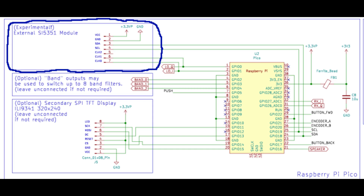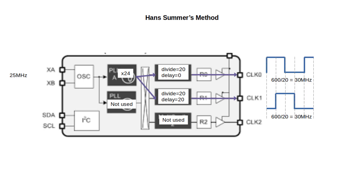The Tayloe detector needs two oscillators 90 degrees apart. It's possible to generate both of these signals using the SI5351. Hans Somers from QRP Labs was the first to come up with this technique. He uses the delay feature in one of the channels of the clock generator to give a 90 degree phase shift. This technique works really well, but is limited to a minimum frequency of 4 MHz. But we'd like the receiver to work on the long wave, medium wave and lower short wave bands too.